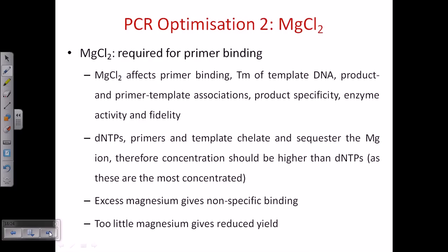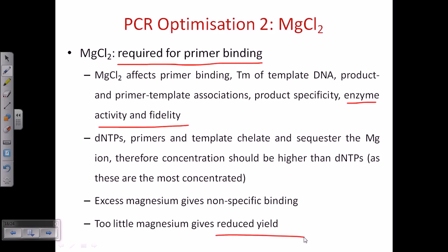Second is magnesium chloride concentration. MgCl2 is required for primer binding and primer-template association, and it affects product specificity, enzyme activity, and fidelity. Excess magnesium gives non-specific binding; too little gives reduced yield. DNTPs, templates, and primers all chelate magnesium ions, so the concentration of MgCl2 must be carefully optimized.